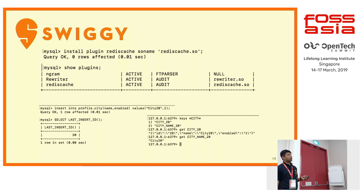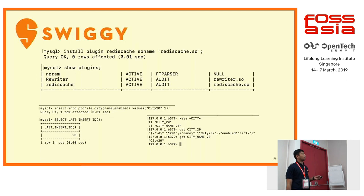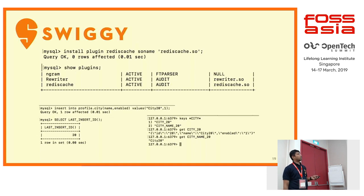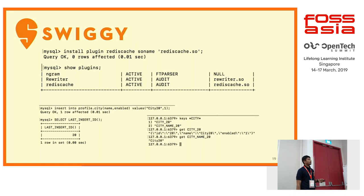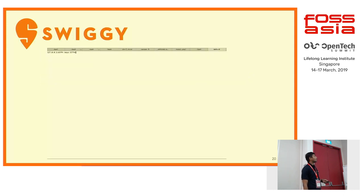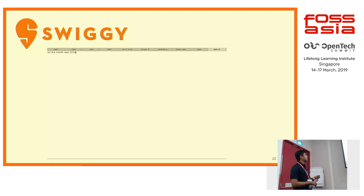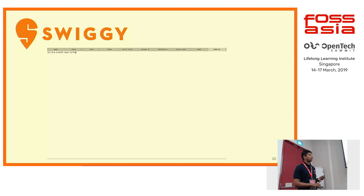You go to Redis and search for keys starting with 'city'. You see two city keys: 'city_20' and 'city_name_20'. The key 'city_20' gives all data of the row in JSON format, and 'city_name_20' gives the name of the city. This video demo also shows an example where inserting a customer will fetch and store the customer's city data as well, demonstrating the linking of caching rules.